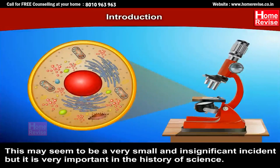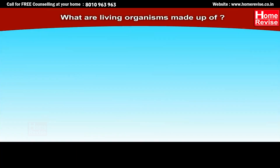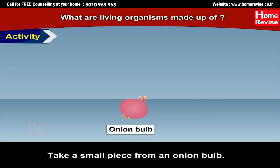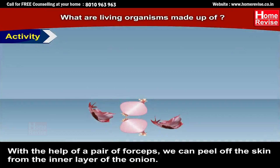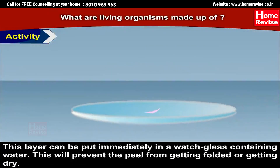This may seem to be a very small and insignificant incident, but it is very important in the history of science. Let us find out about cells — what are living organisms made up of? First, find an onion bulb. Take a small piece from it; with the help of a pair of forceps, peel off the skin from the inner layer of the onion.